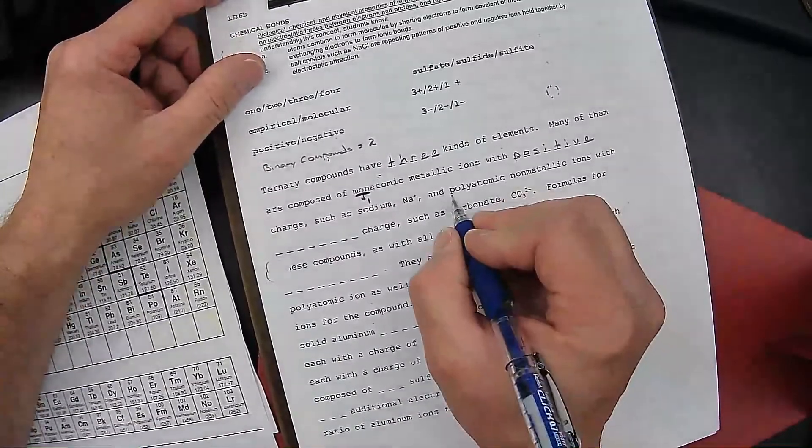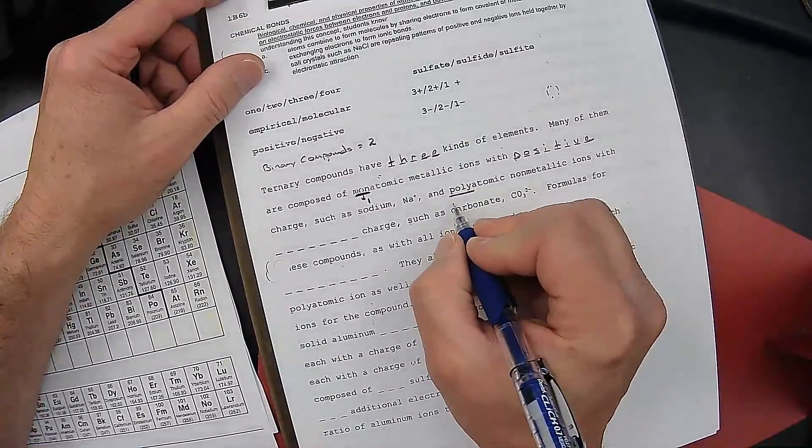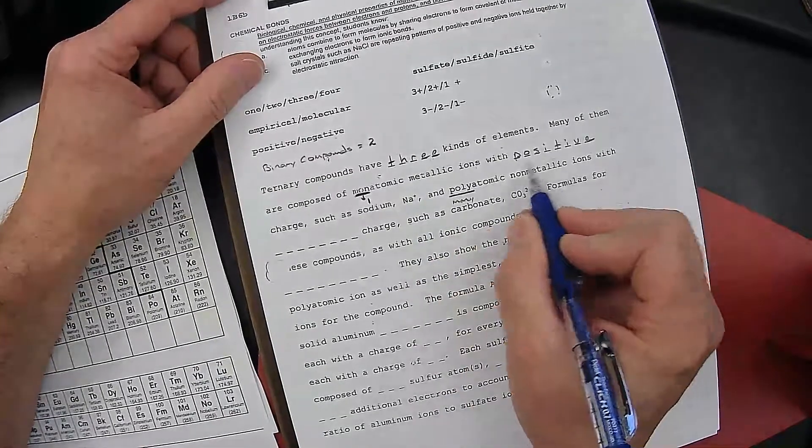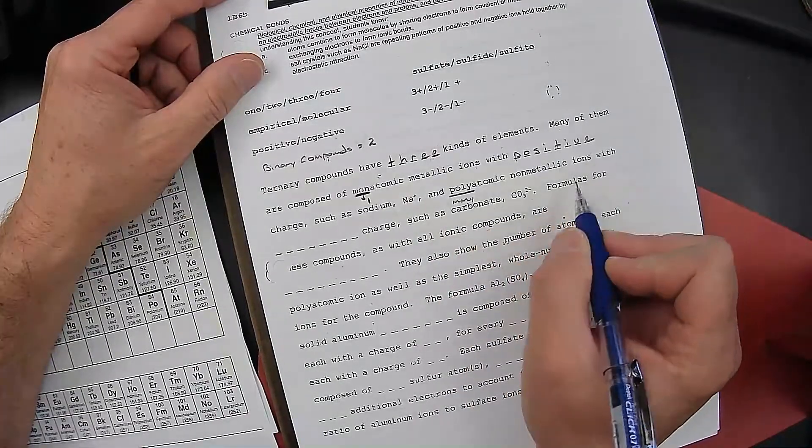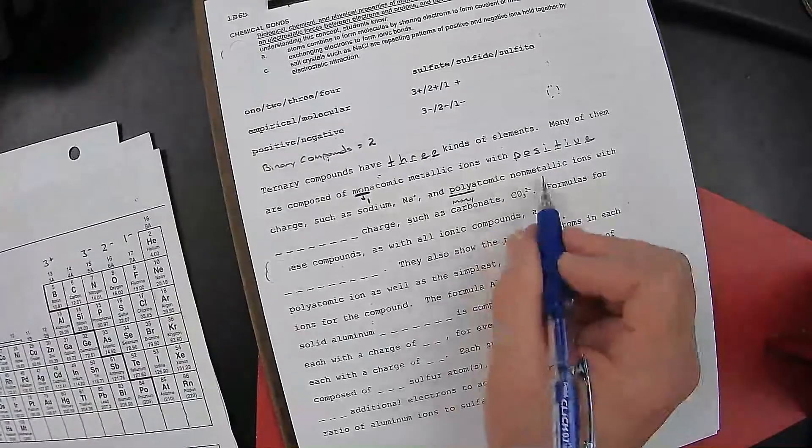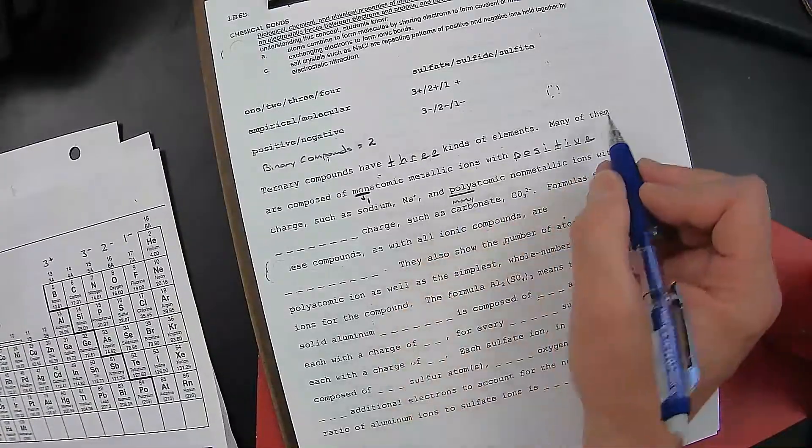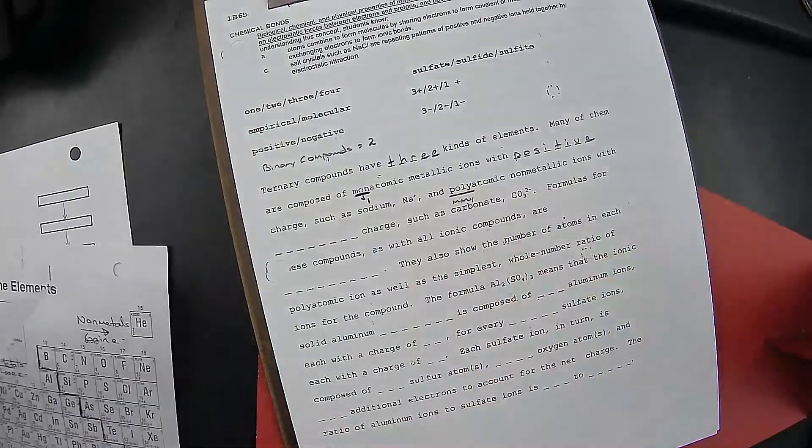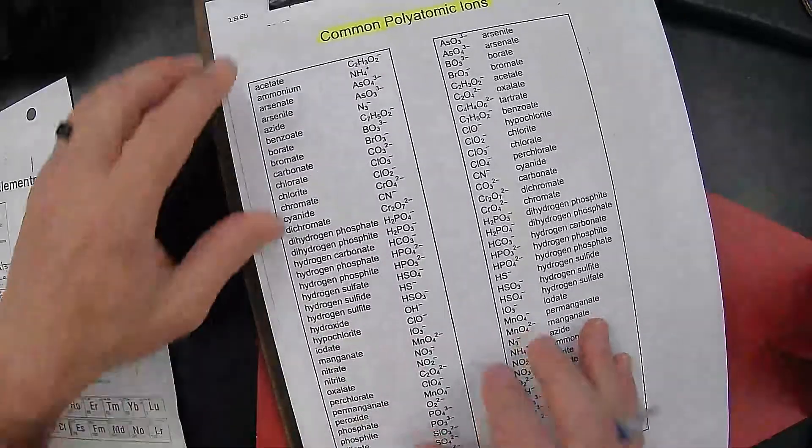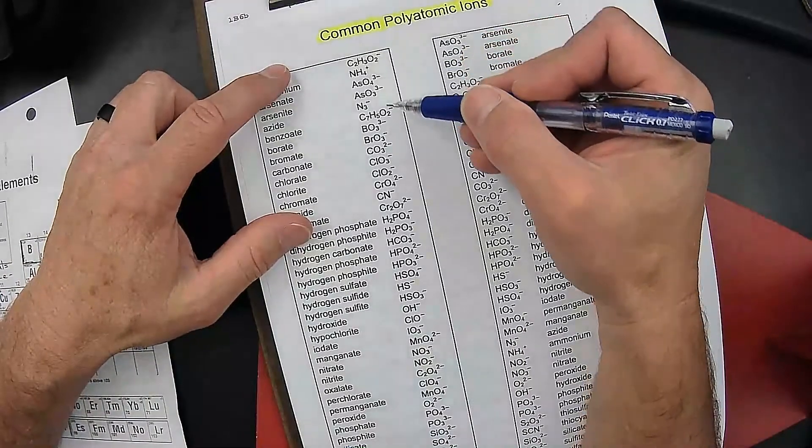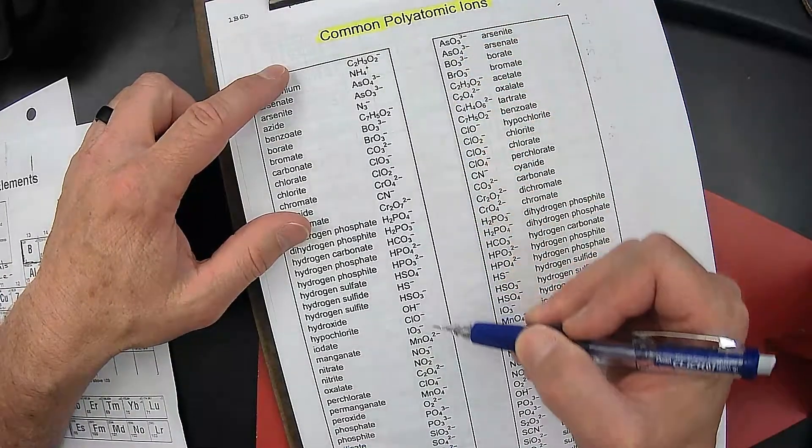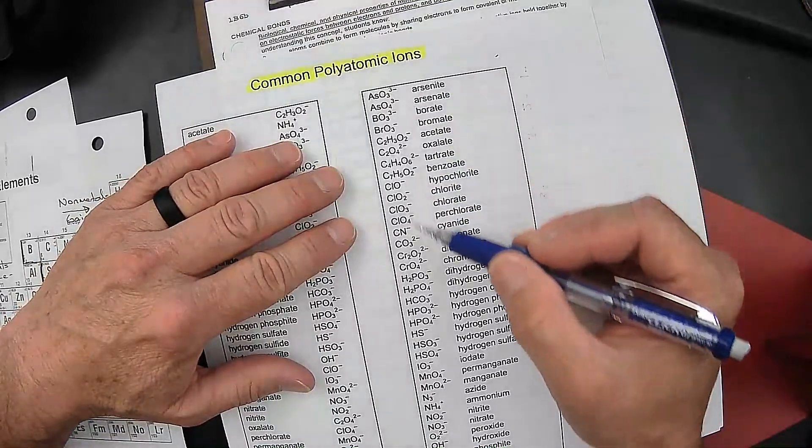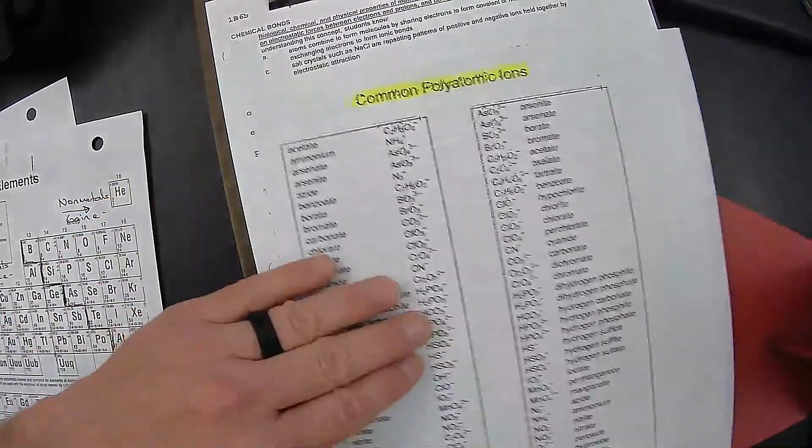And a poly, meaning many, many atoms forming a non-metallic ion. Why is it, in most cases, many of them contain this polyatomic? Well, when we look at this, look at the chart and all of the negatives. Almost every single one of these polyatomic ions have a negative charge.